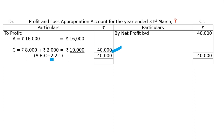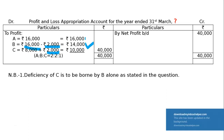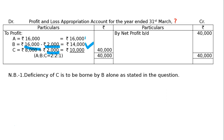Then B का होगा 2/5 of 40,000 = 16,000. तो ये जो deficiency C का है, that will only be borne by B alone. So the final distribution of profit: A का 16,000, B का 14,000, C का 10,000.